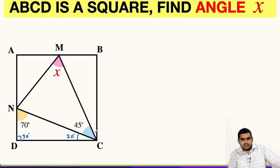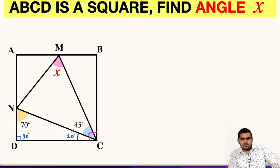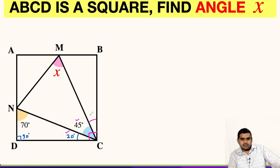Likewise, angle C of the square will be 90 degrees because ABCD is a square. This angle is made up of three angles: the first is 20, the second is 45, and the third will be the remaining angle. These three angles must sum up to 90 degrees. So the third angle will be 25 degrees, because 25 plus 45 is 70, and 70 plus 20 is 90.